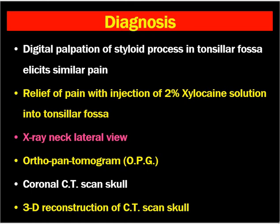X-ray neck lateral view, orthopantomogram, and coronal CT scan — all of these will show the elongated styloid process and allow measurement of its length. 3D reconstruction of the CT scan can demonstrate either the elongated styloid process or ossified stylohyoid ligament. Therefore, 3D reconstruction of CT scan is the best investigation of choice for elongated styloid process.